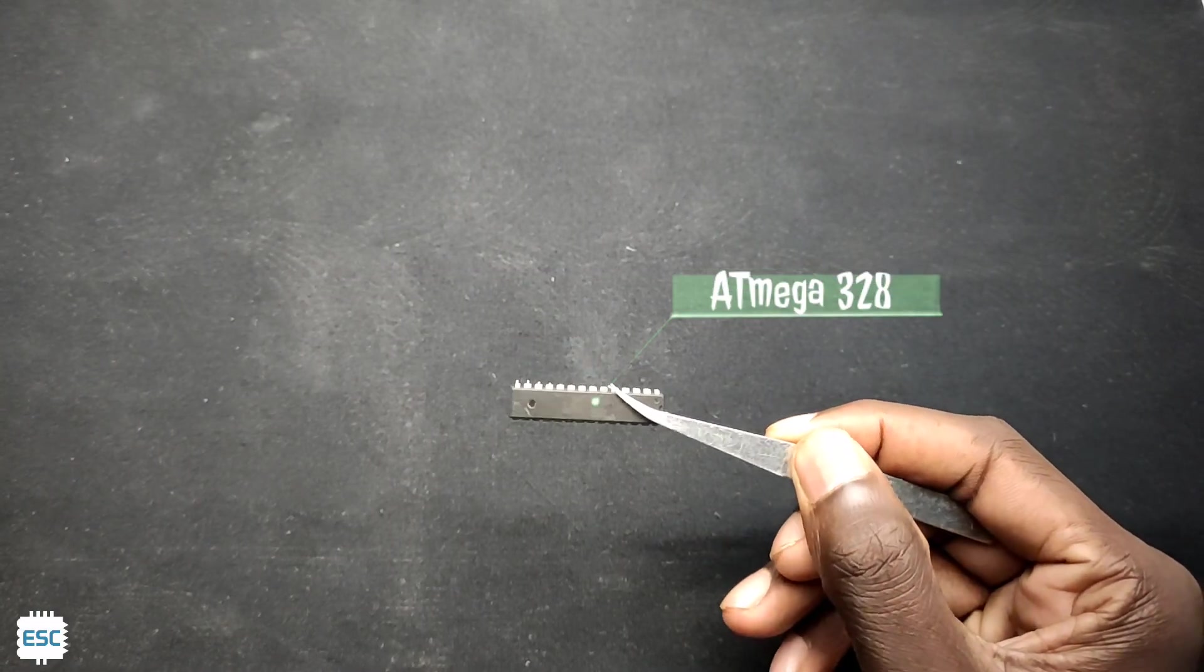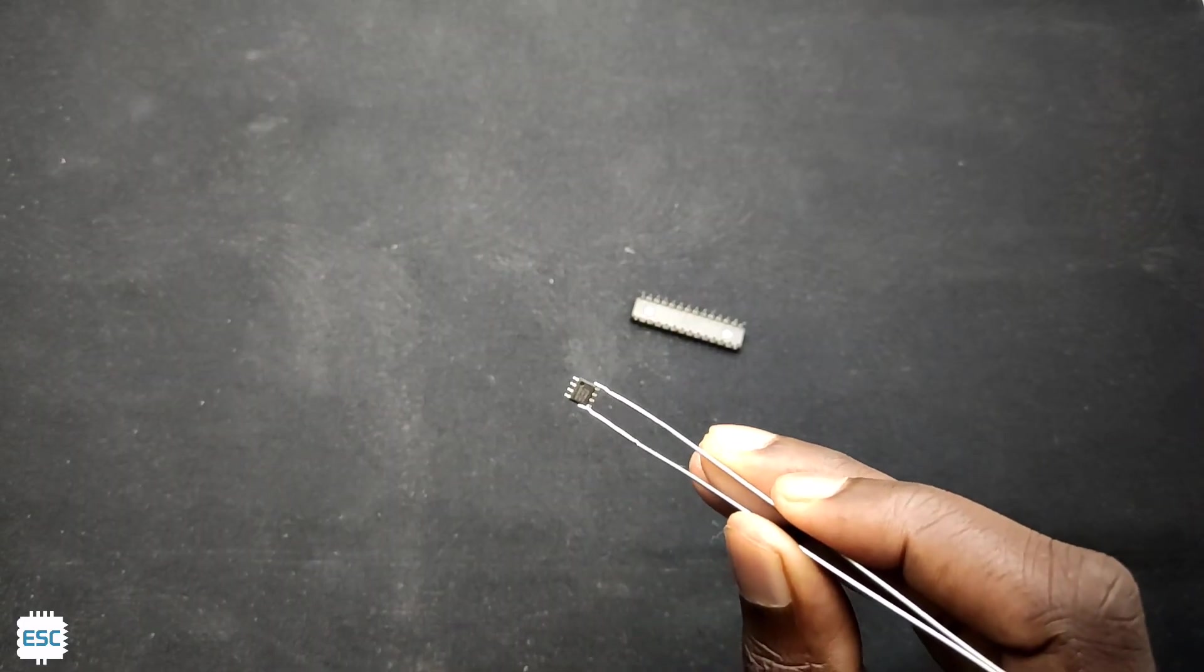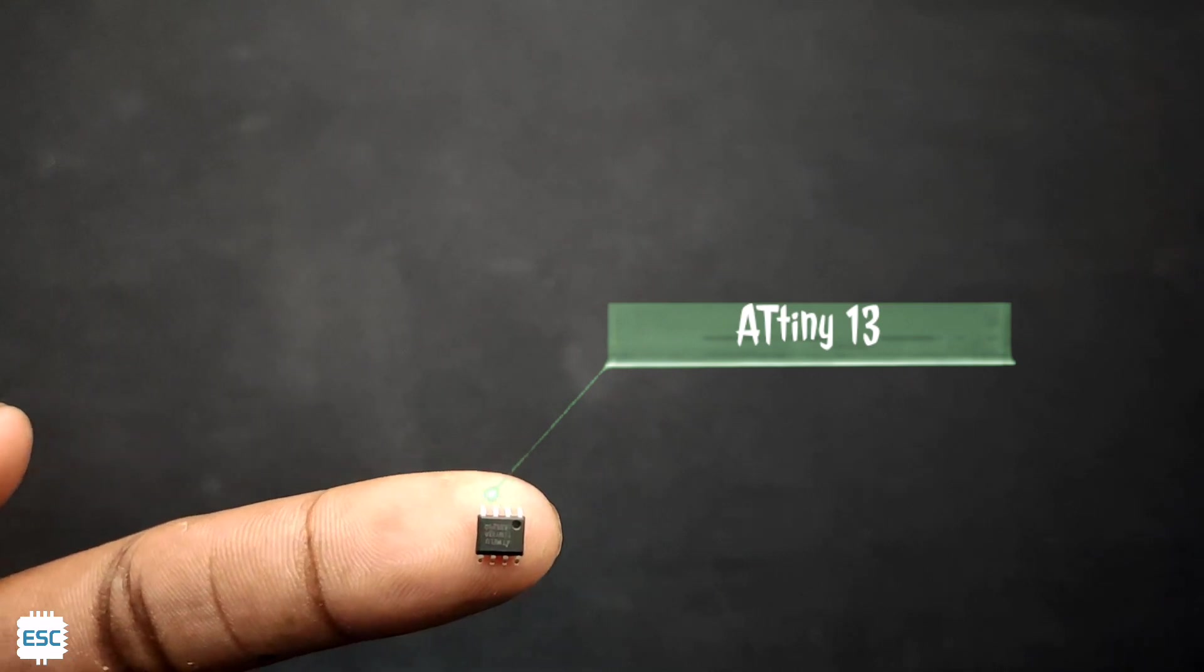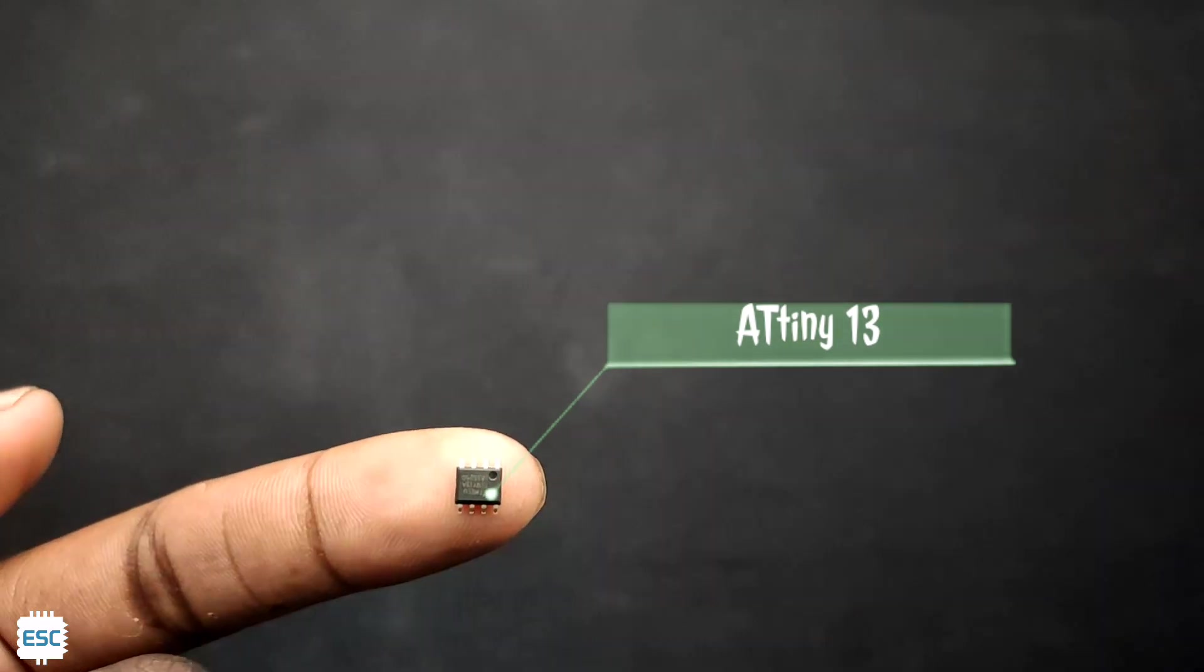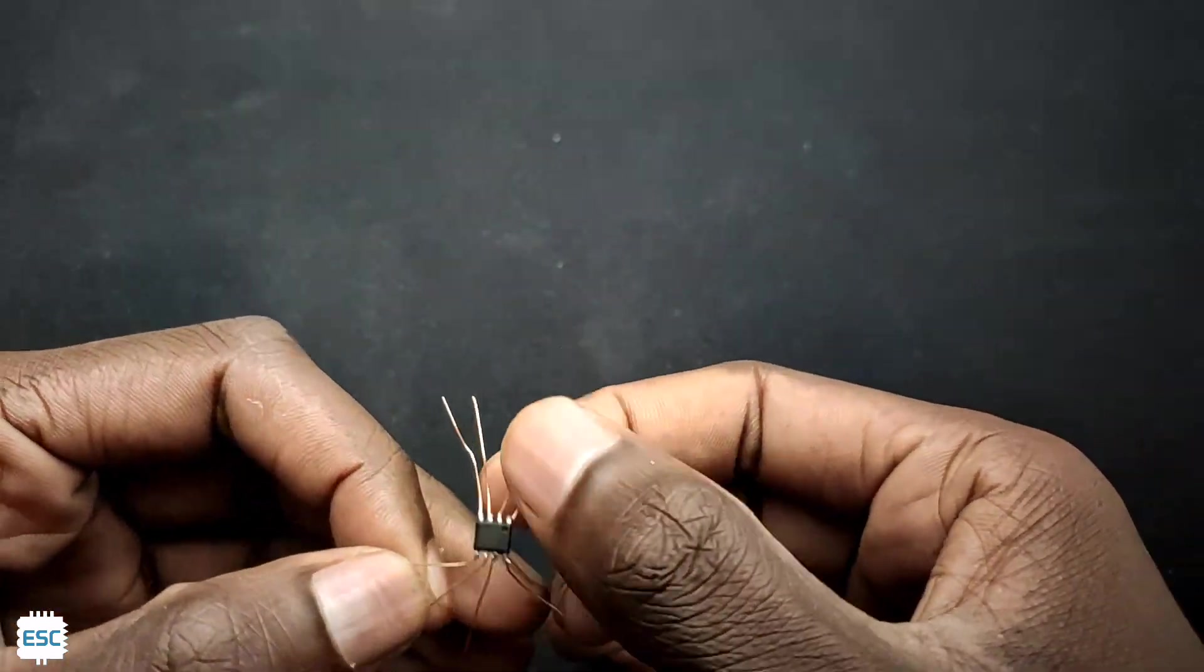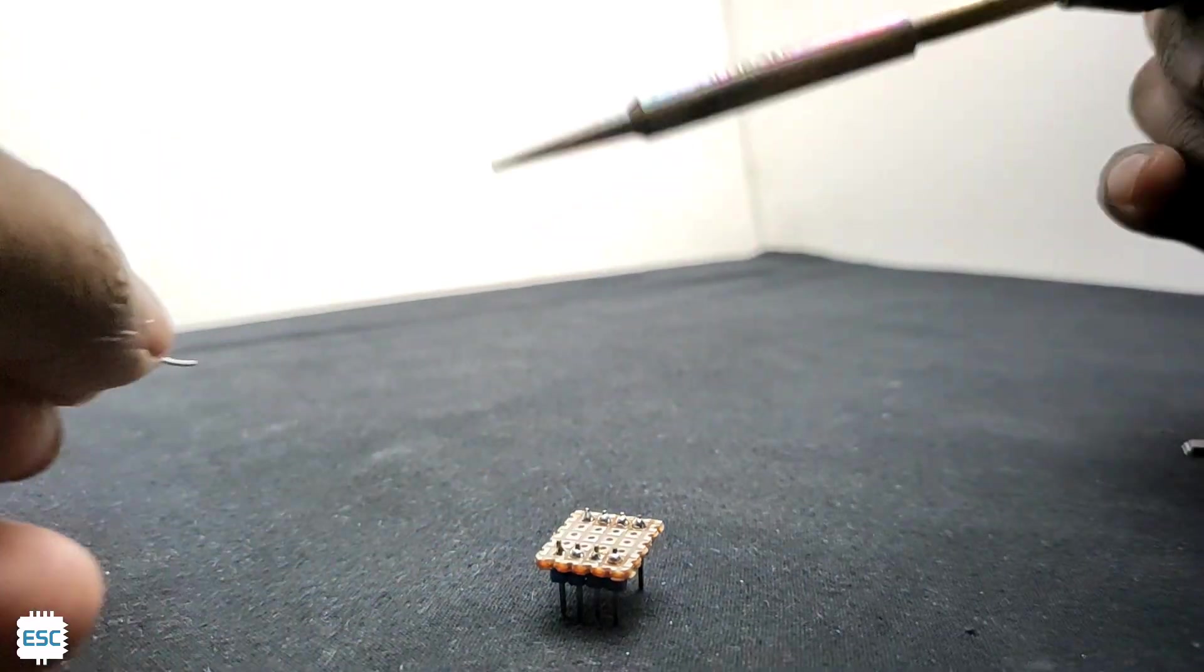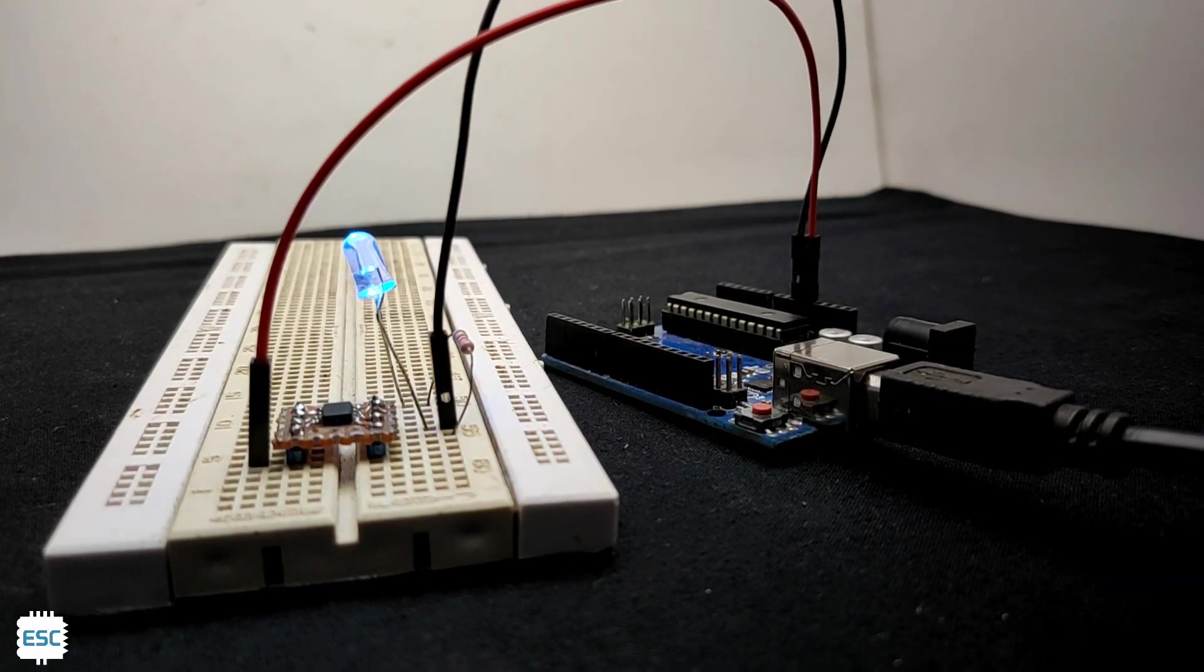Hello there, this is the normal ATmega328 chip. Now you can see a small chip, and this is ATtiny13 microcontroller, a very small low-cost microcontroller. It has 8 pins and 1 kilobyte of memory. In this video tutorial, I'm going to show you how to upload code to ATtiny13 using Arduino Uno. Let's get started.